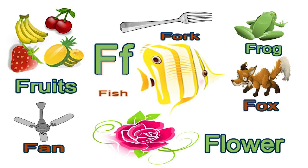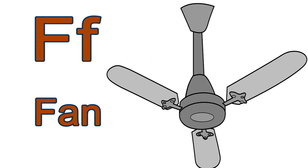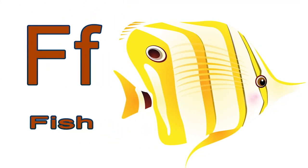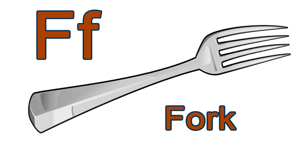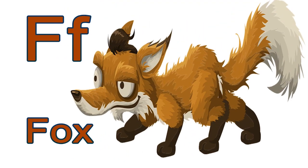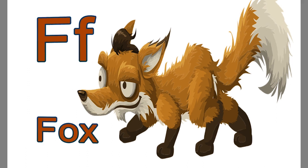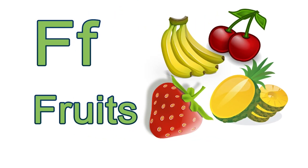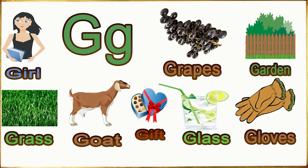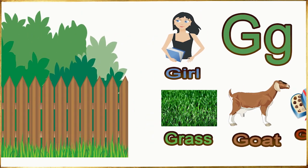Let us start with F. F for fan. F for fish. F for flower. F for fork. F for fox. F for frog. F for fruit.